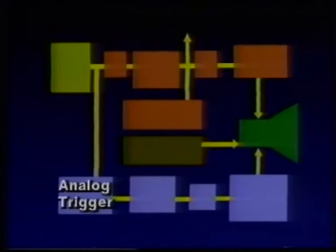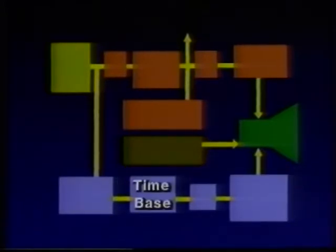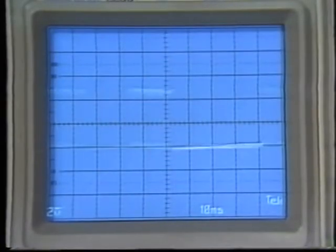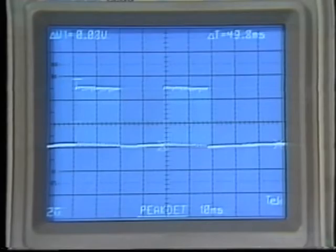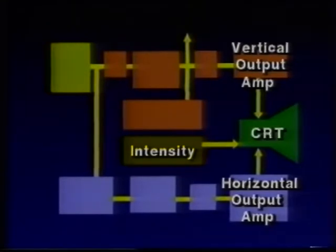An analog trigger block triggers the horizontal section, which includes a precise digital time base and a digital-to-analog converter which changes the time base output to an analog signal. This signal in turn drives the analog horizontal output amplifier. Many DSOs use display systems similar to those used in analog scopes, typically consisting of vertical and horizontal output amplifiers, an intensity amplifier, and a cathode ray tube.